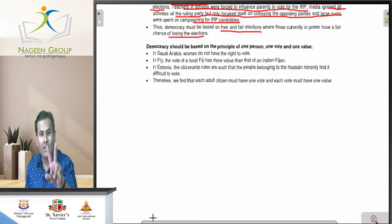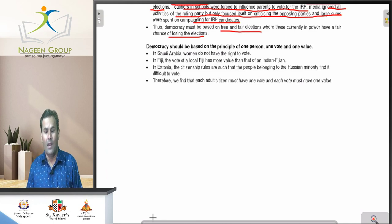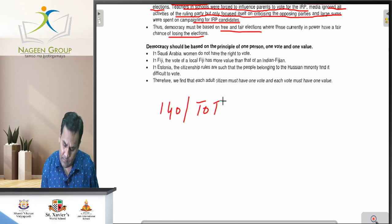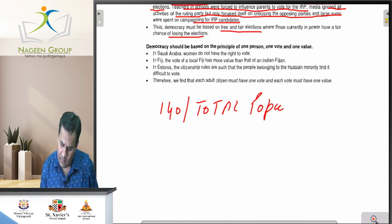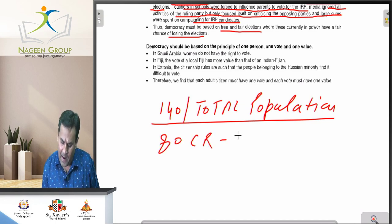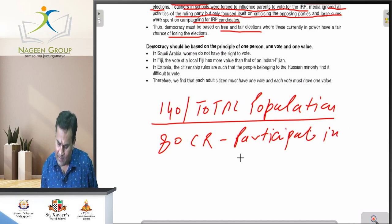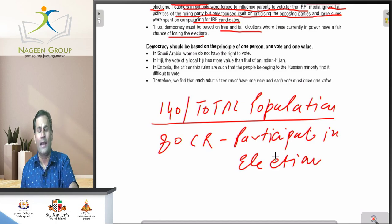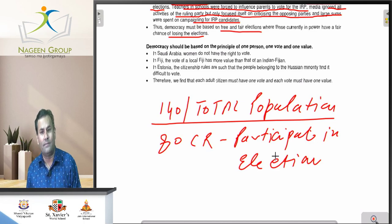In India, there are 140 crore total population, out of which nearly 80 crore participate in elections. As a democratic country, all 80 crore voters participate in elections and the value of their vote is equal to that of any other person — one person, one vote, one value.